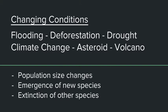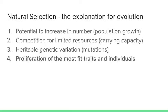Going back to my initial claim — where changing conditions cause either populations to change in size, the emergence of new species, or the extinction of species — we can ask: do changing conditions actually cause this, or are they just correlated? When scientists make that claim, they support the causation relationship through the idea of natural selection.